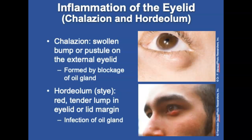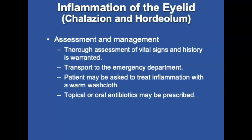Inflammation of the eyelid involves oil glands and ducts. There are two types: a small swollen bump or pustule on the external eyelid formed by blockage and swelling of an oil gland, and a sty — an infection of an oil gland producing a red, tender lump at the lid margin. A thorough assessment with vital signs, history, and physician transport is warranted. The patient will usually be asked to apply warm compresses for 5 to 10 minutes several times a day, and topical or oral antibiotics may be prescribed.